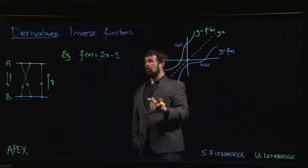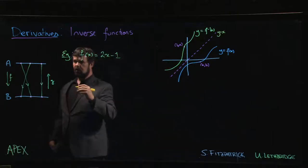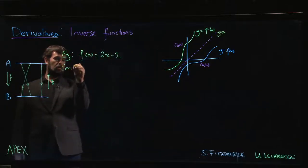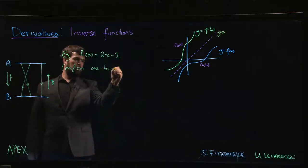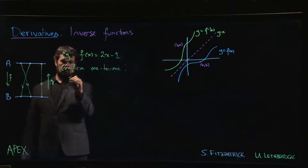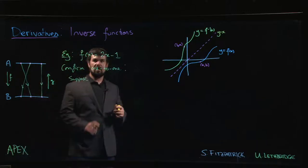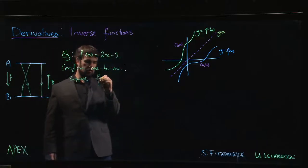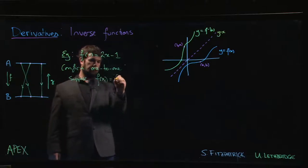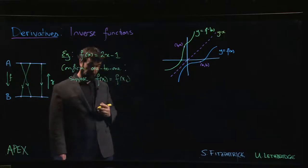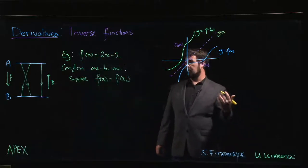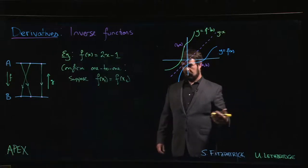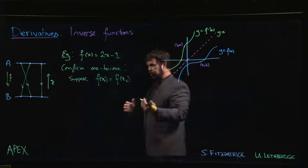We know it's one-to-one. If we wanted to confirm that it's one-to-one, the definition says if f of x1 is equal to f of x2 for some x1, x2, then x1, x2 have to turn out to be the same x value. They have to be the same point. If we have the same outputs, they have to have come from the same input.